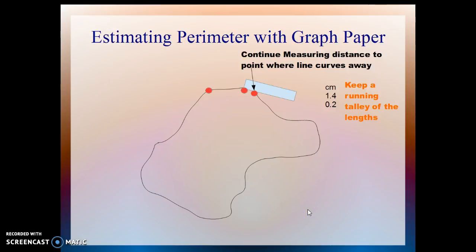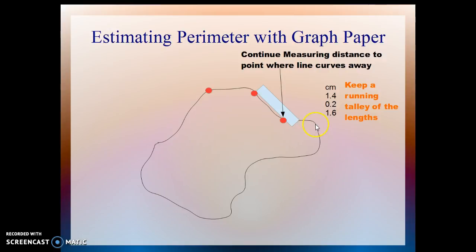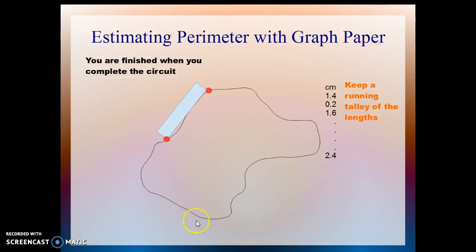We'll do this again going to the next point where the line begins to curve away from the line of the ruler, and a third time. We're going to continue doing that all around the object, getting as close as we can. These curves may be a little difficult — instead of doing one segment from here to here, you might do one here, one down here, then one on the curve, then a straight line, and a couple or three more on this curve.